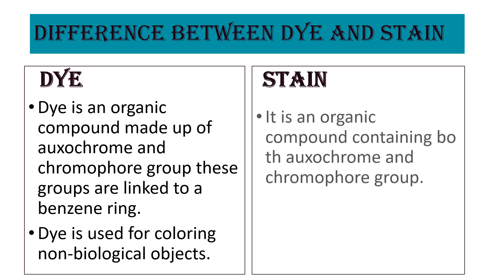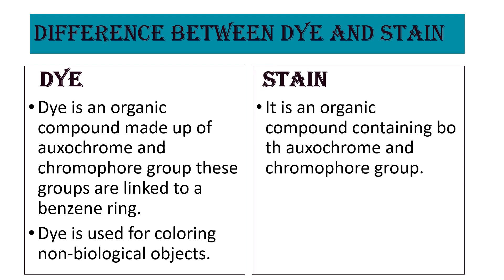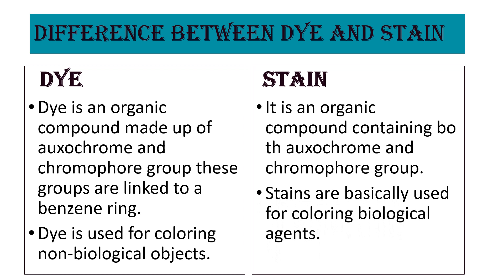Stain is an organic compound containing both oxochrome and chromophore groups, but here these groups are not linked to a benzene ring. Stains are used for coloring biological agents. This is the important differentiation: dye is used for coloring non-biological, non-living things, whereas stain is used for coloring biological agents.